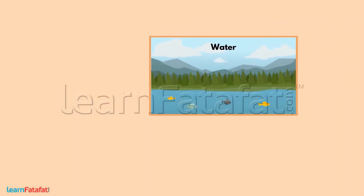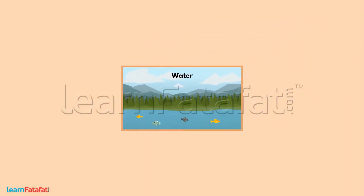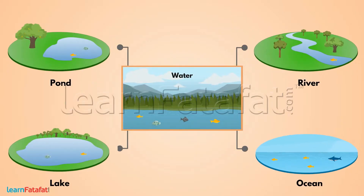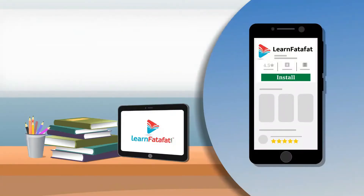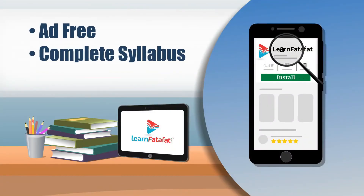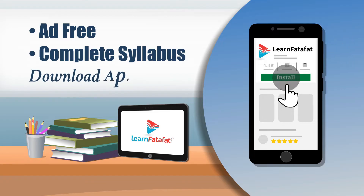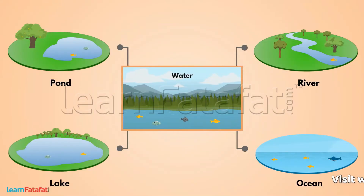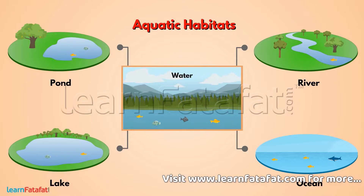Many organisms live in water, more specifically in pond, lake, river, ocean and other water bodies. We say that these organisms live in aquatic habitat.